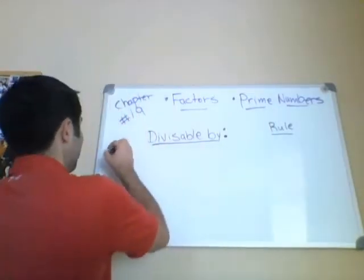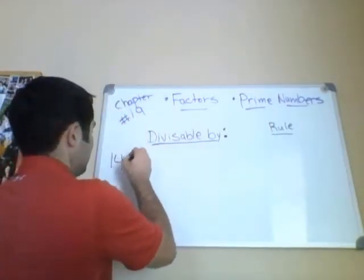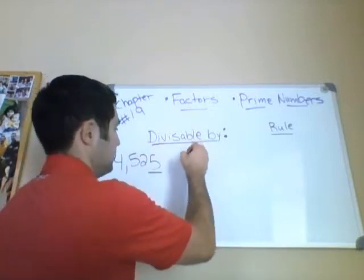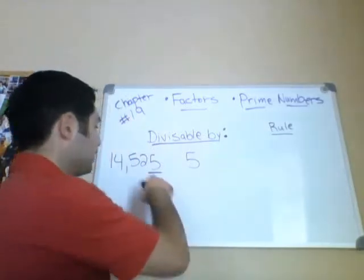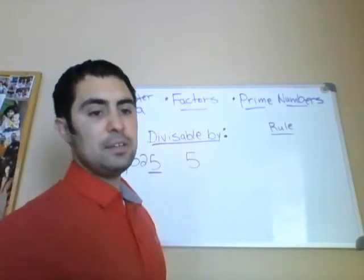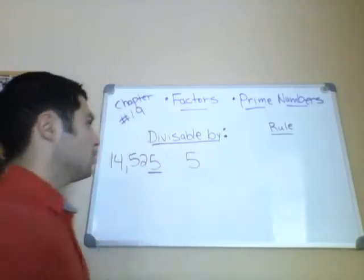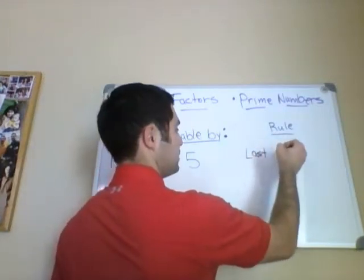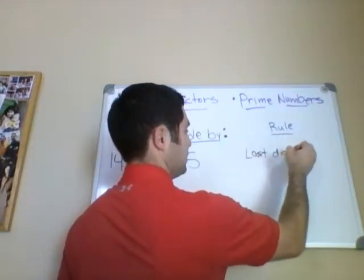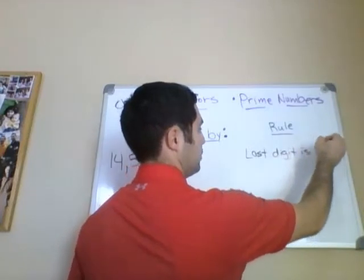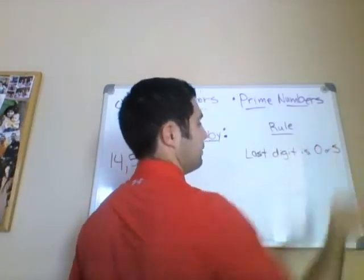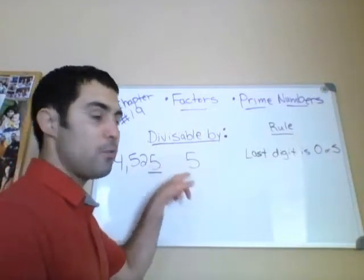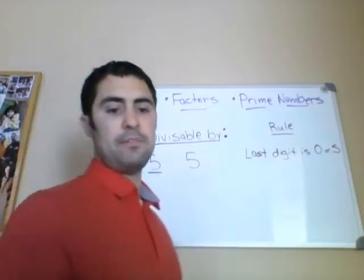Is the number divisible by 5? If the last digit ends in a 0 or a 5, then the number is divisible by 5. Does this end in 5? Yes — therefore the whole number is divisible by 5.